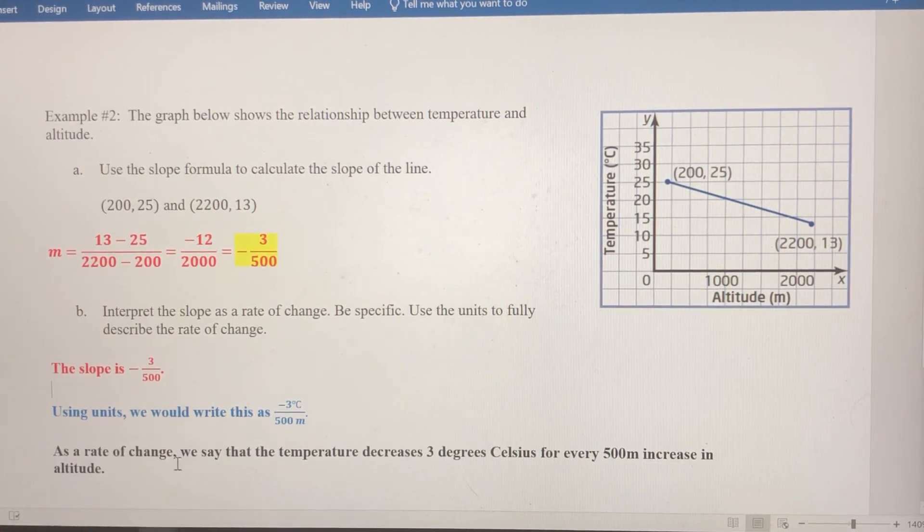So as a rate of change, what we're going to say then is that the temperature decreases because it's negative. The temperature decreases by 3 degrees Celsius for every 500 meter increase in altitude. So as we go up by 500 meters, say from 0 to 500 here, we could expect the temperature to drop by 3 degrees. As we go from 500 to 1000, we could expect the temperature to drop another 3 degrees, and so on down the line.